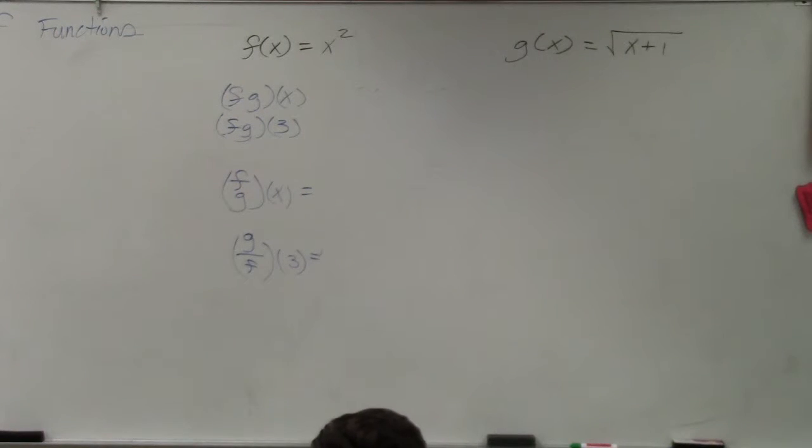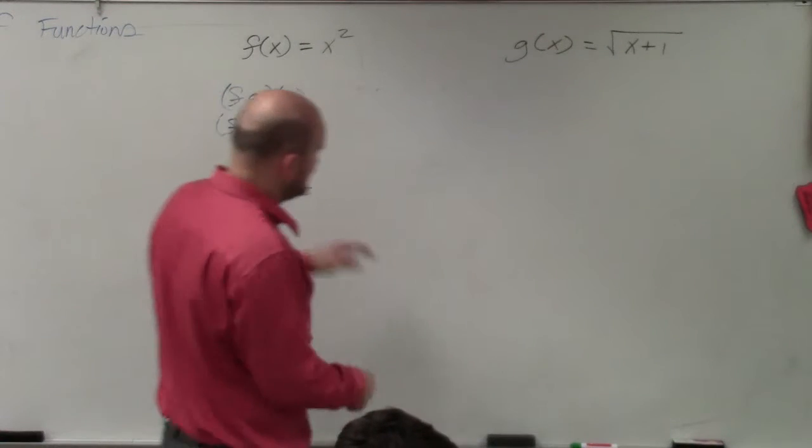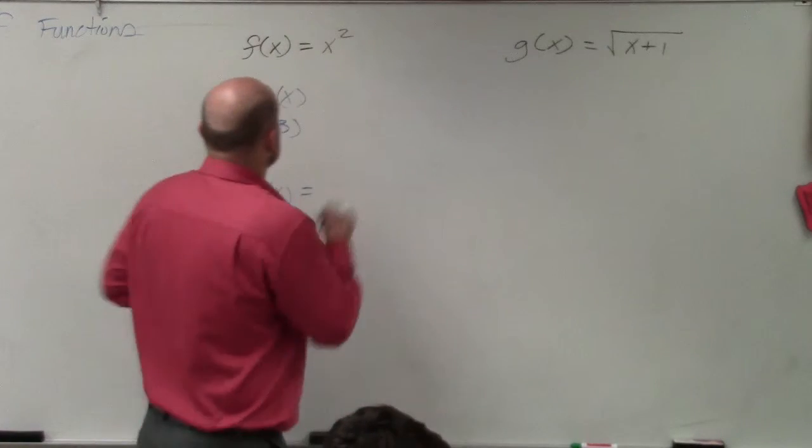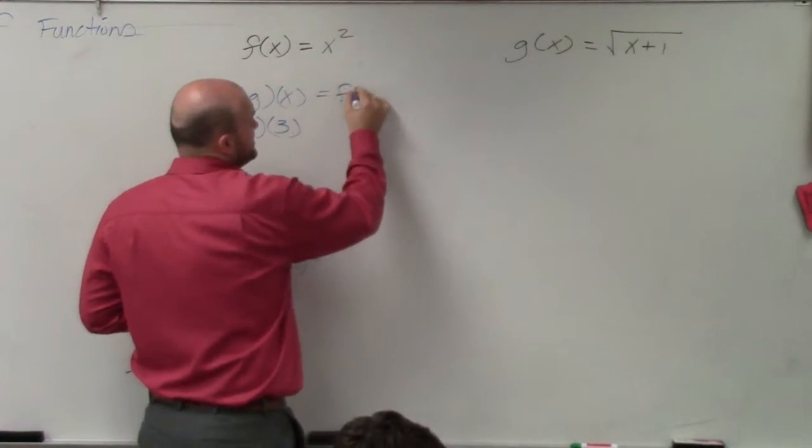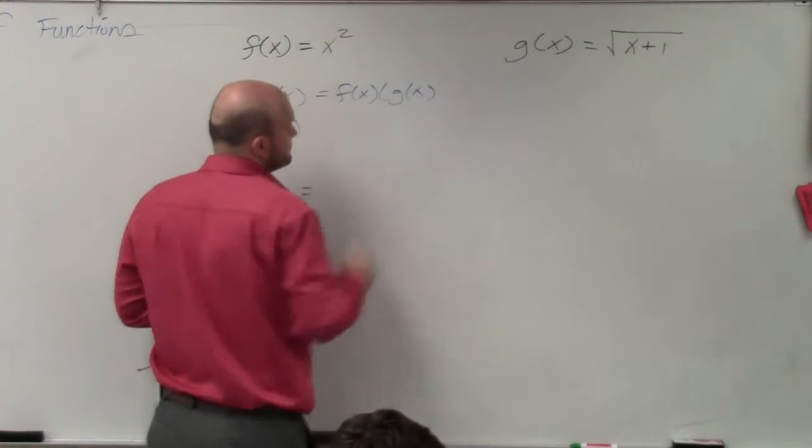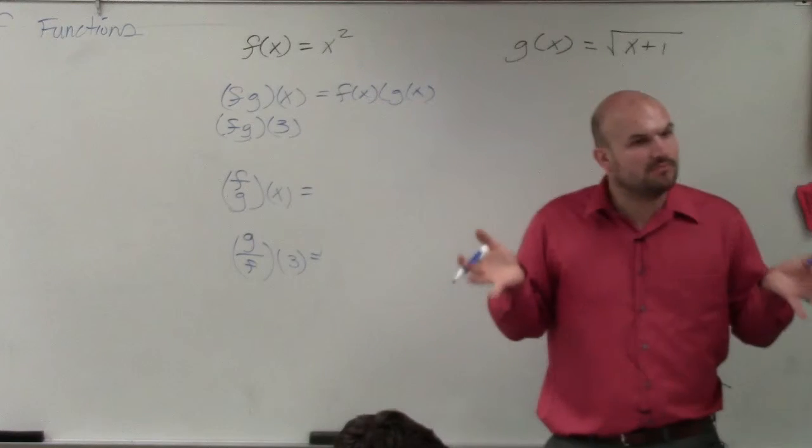Now we're going to be dealing with fg of x. I'm going to ask you guys to go ahead and identify what the domain is. Basically, fg of x just means f of x times g of x. So all you're going to do is multiply them.